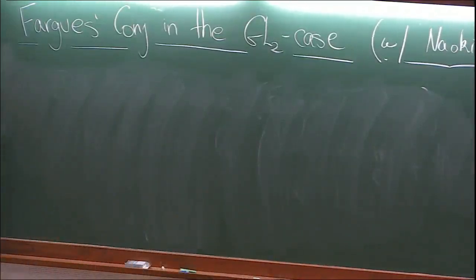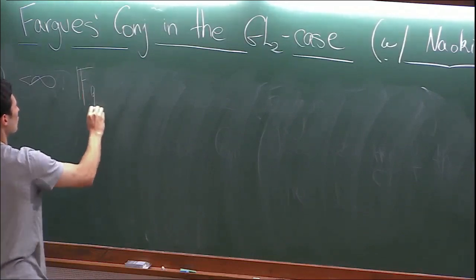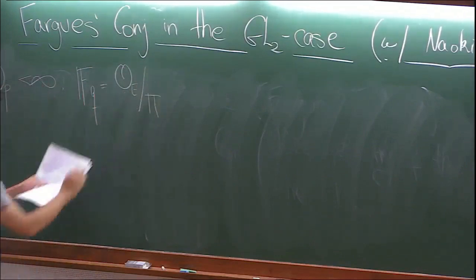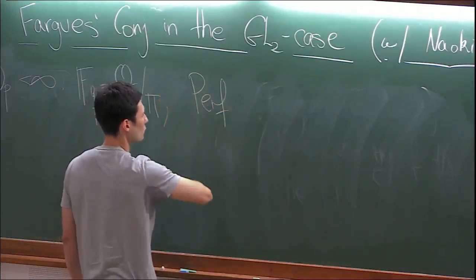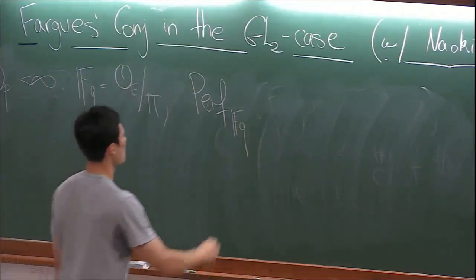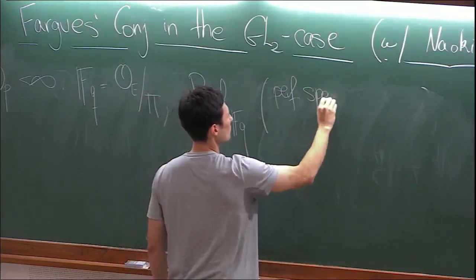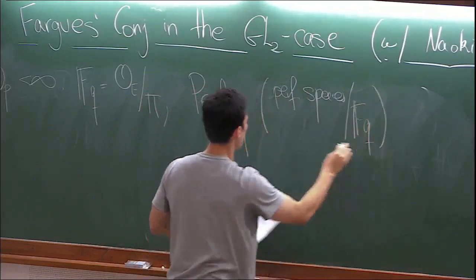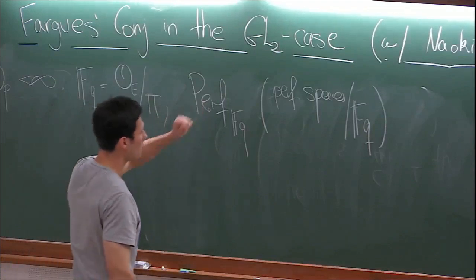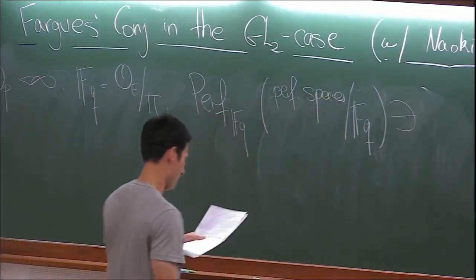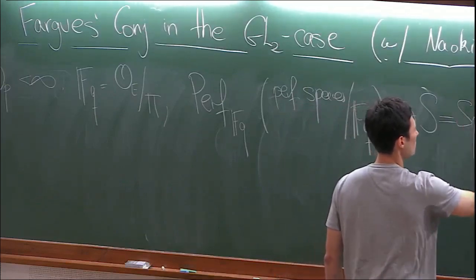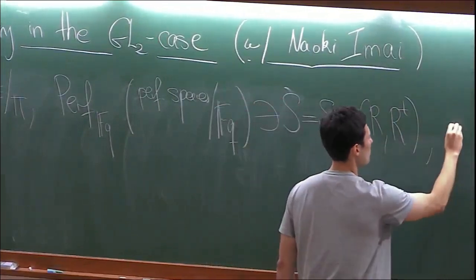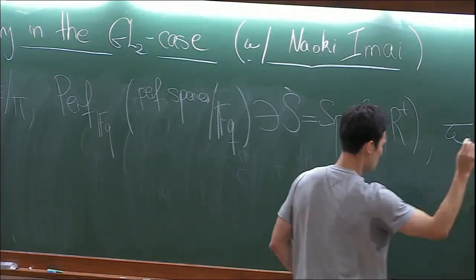Some notation — I won't introduce too much. E will be a finite extension of Q_p, F_q will be my residue field after I fix some uniformizer pi. My category of test objects will be perfectoid spaces over F_q — just perfect spaces — equipped with some nice topology like the pro-étale topology or the v-topology. S will be my test object and it will always be affinoid, and I will fix a pseudo-uniformizer pi of R.